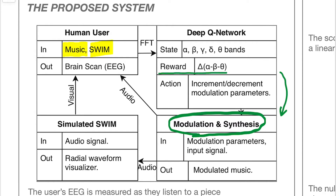The reward function for this agent is the user's meditative state as inferred via EEG. The state space — the other information provided to the algorithm as it makes its decision — included the rest of the EEG band powers. The actions that the agent could take included incrementing or decrementing the oscillation frequency once per second.